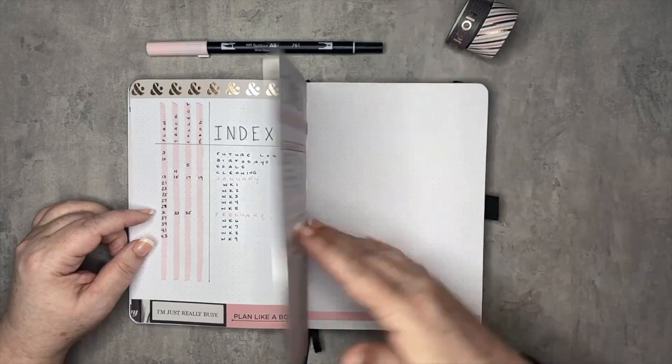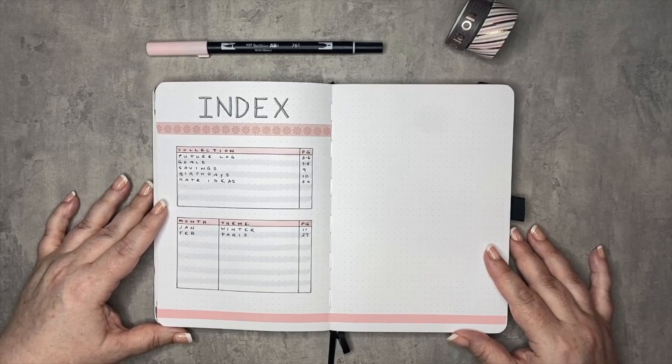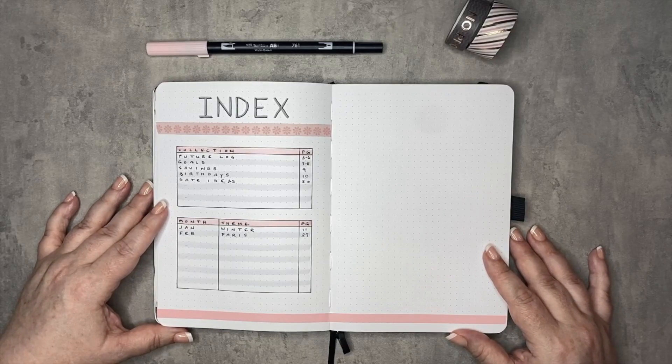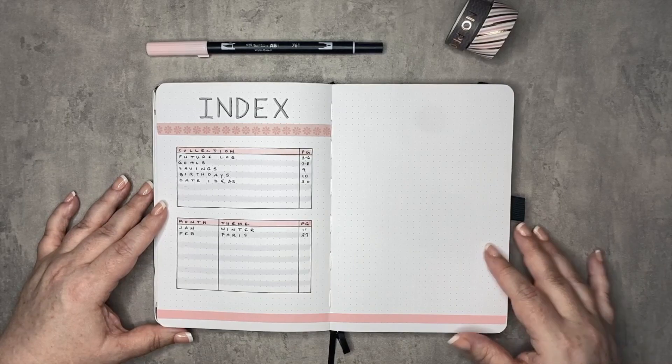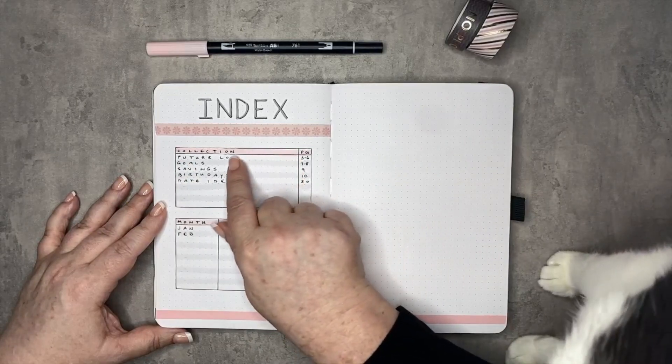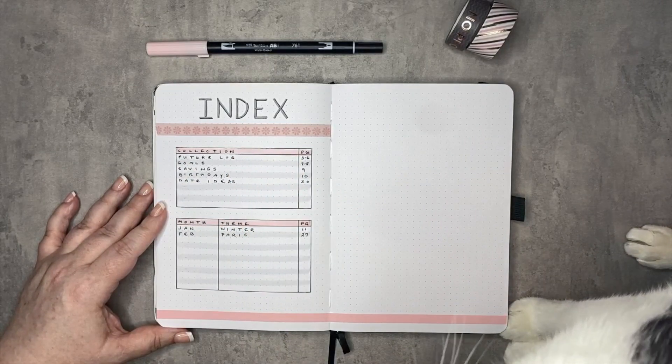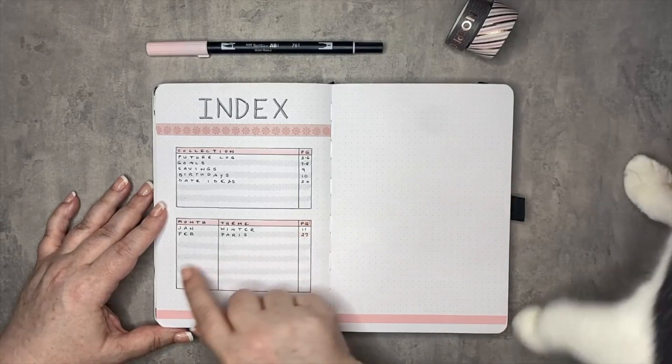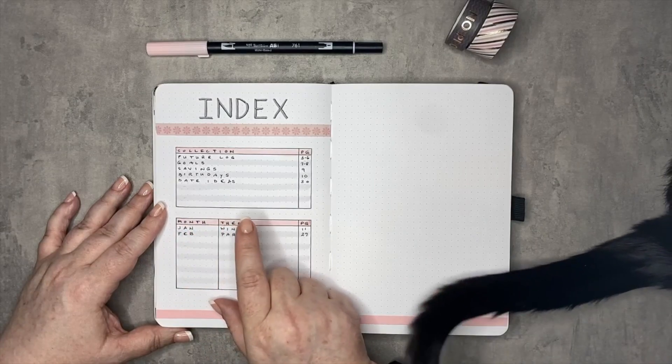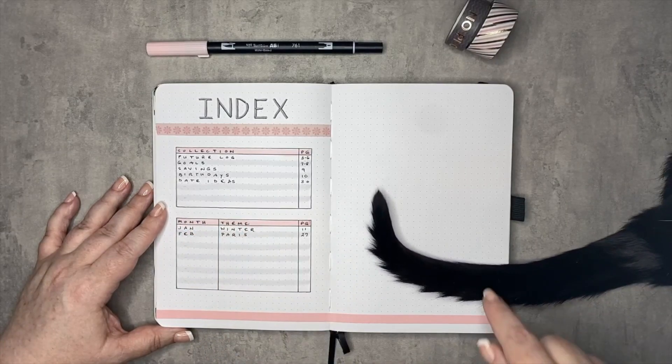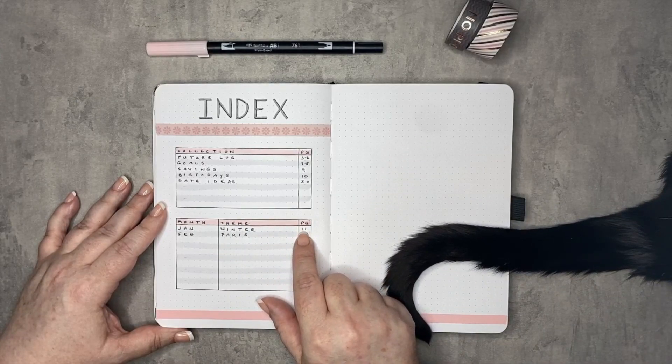And then the last one that I have in this particular version is another one that separates out the collections from the months. But it also includes being able to track what sort of a theme you put on your monthly. So here we have the collections and Vermeer is coming into camera to say hello. Hi there Vermeer. And then you have your months down at the bottom. So we have January with a theme of winter and this lovely cat's tail. Look at this.